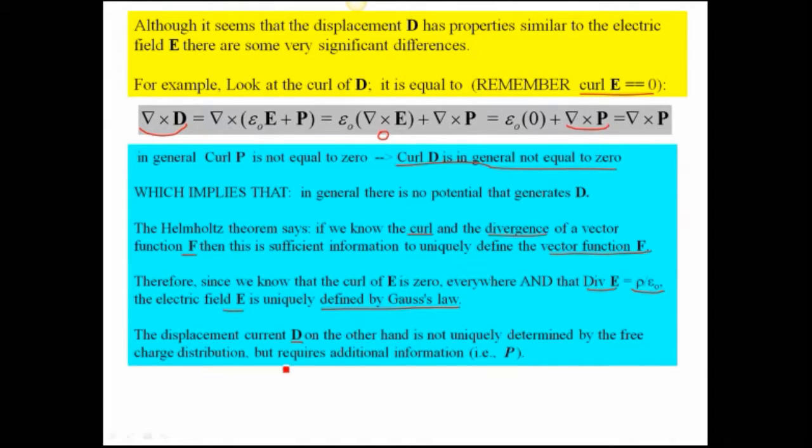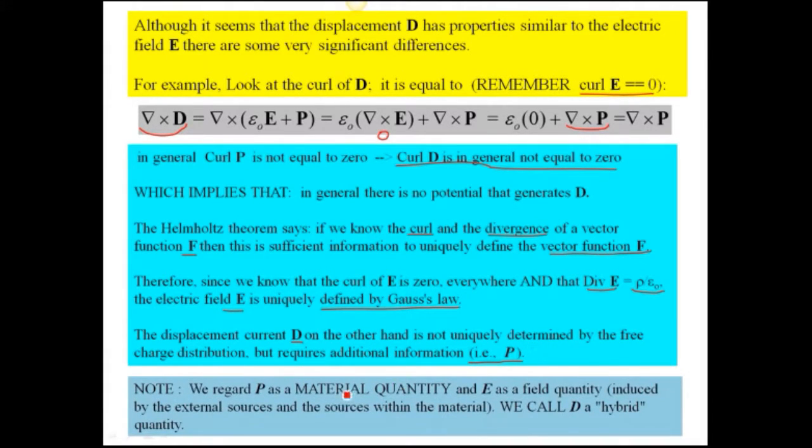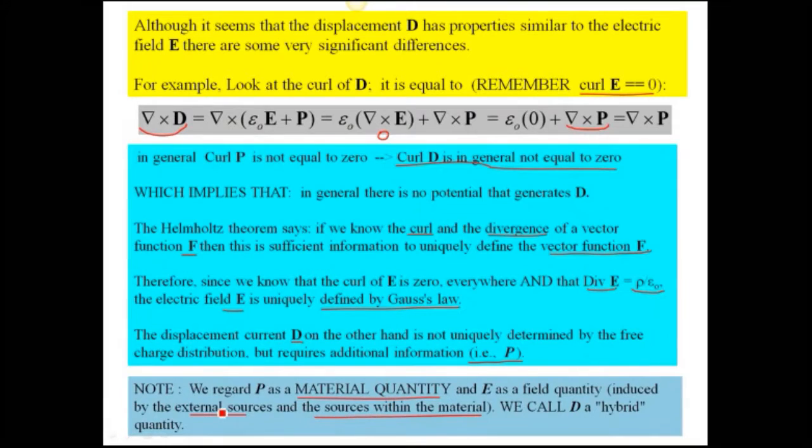Capital D, on the other hand, is not uniquely determined by the free charge distribution, but requires additional information, namely the vector P. So we regard P, the polarization, as a material quantity. It has to have dielectric properties in order to get a P, and E is a field quantity induced by the external sources and the sources within the material. Free charges in the material or bound charges. Free charges on the surface and bound charge on the surface. So for that we call D a hybrid quantity.